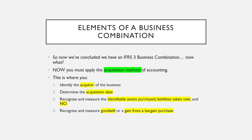The four steps are: first, identify who the acquirer is; second, determine the acquisition date; third, recognize and measure the identifiable assets purchased and the liabilities taken over — which I'll refer to as the net identifiable assets — and also recognize and measure NCI; and finally, recognize and measure goodwill or a gain from a bargain purchase.